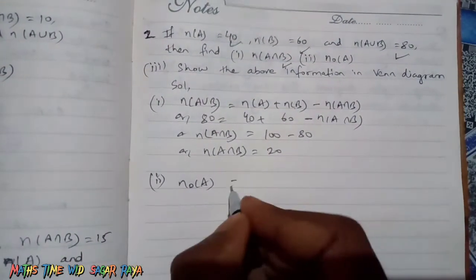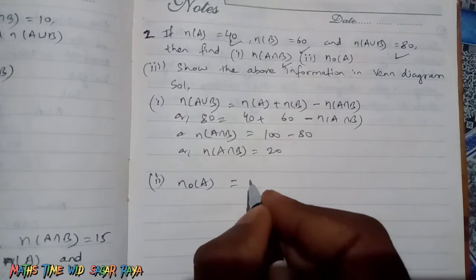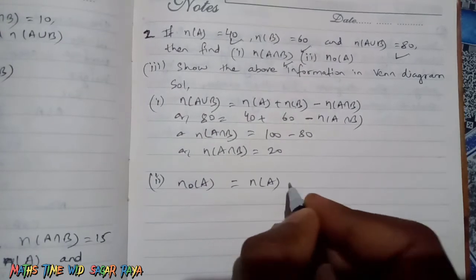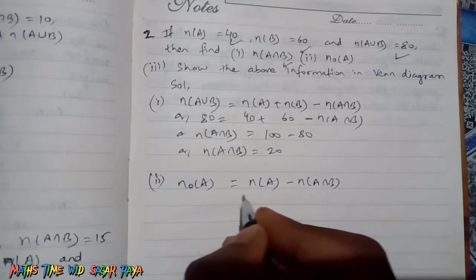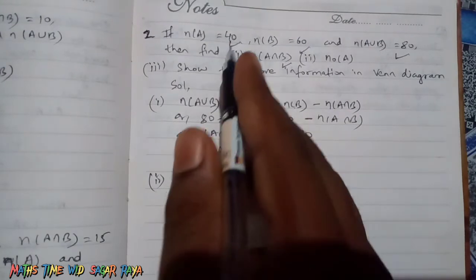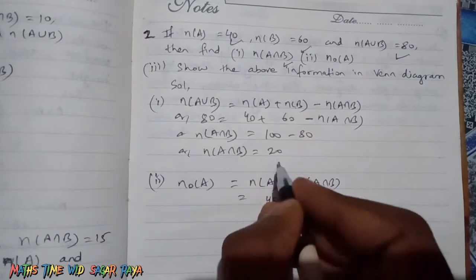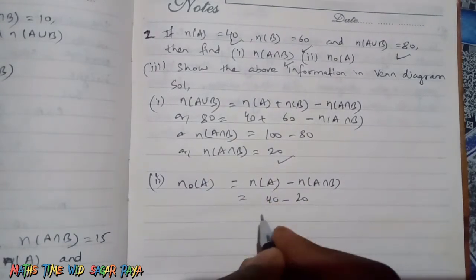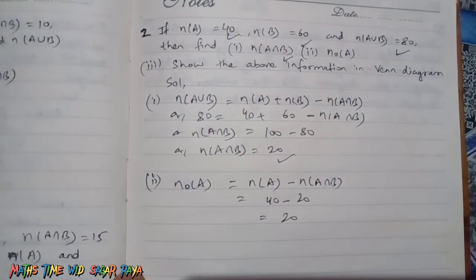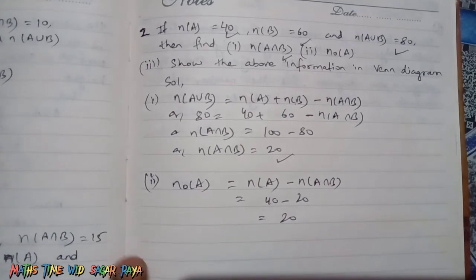n(only A) is found by subtracting n(A∩B) from n(A). So n(A) is 40 and n(A∩B) we just calculated is 20. Let's subtract this and we get 20. Finally, we have to show this information in a Venn diagram.